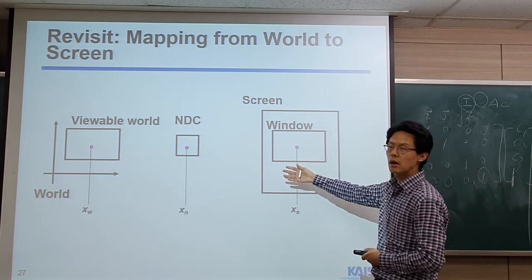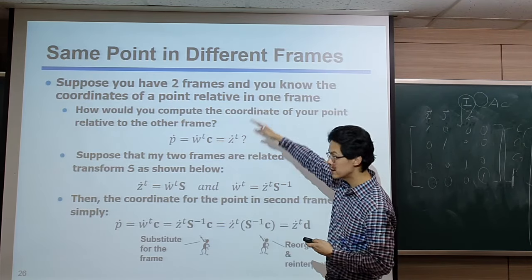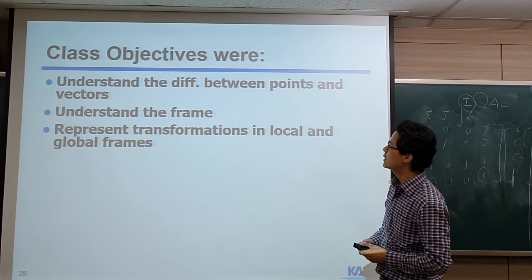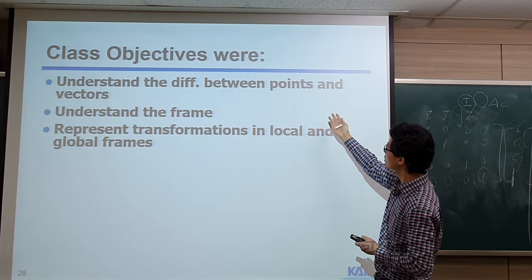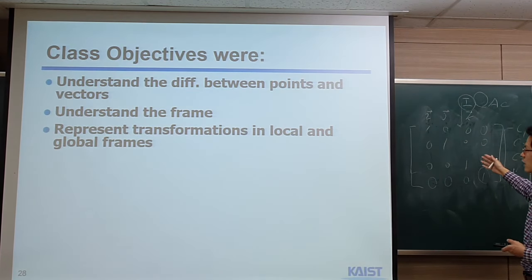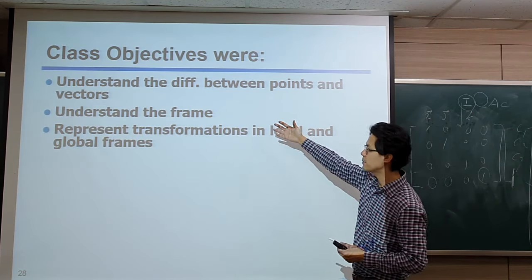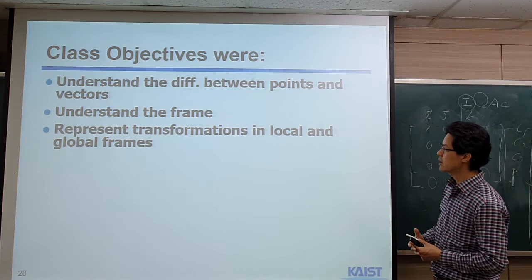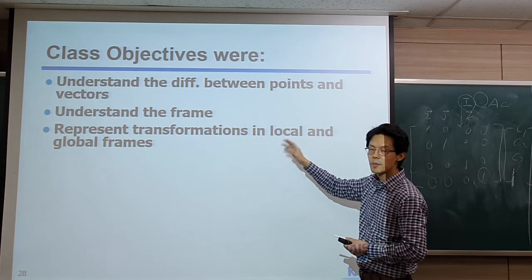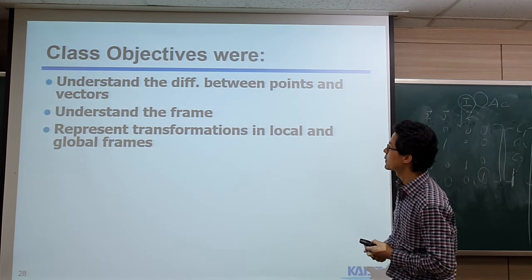So, basically, once we know the relationship between the viewable world and a window, we can apply this approach. At the time we took a different approach, but that approach can be generalized to fit into this relationship. I hope that you can understand the difference between point and vector, and differentiate them explicitly by using 0 and 1 as the homogeneous coordinate. We introduced the affine frame and the frame, and you can understand that transformations can be represented in a local or global frame — they are equivalent but just different valid interpretations.